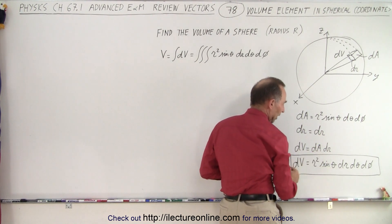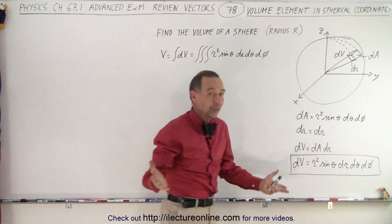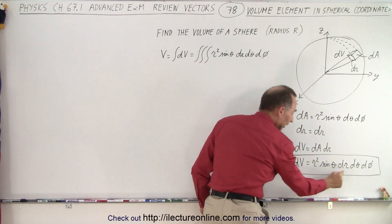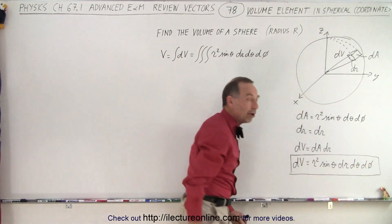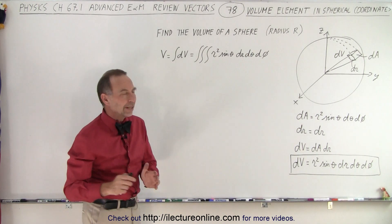We multiply dA times dr and we get now the volume element. So the only thing we do is we take the area element and multiply it times dr to give it a volume. So now let's go ahead and use that.